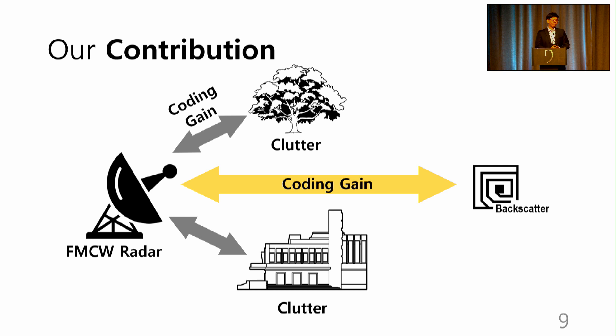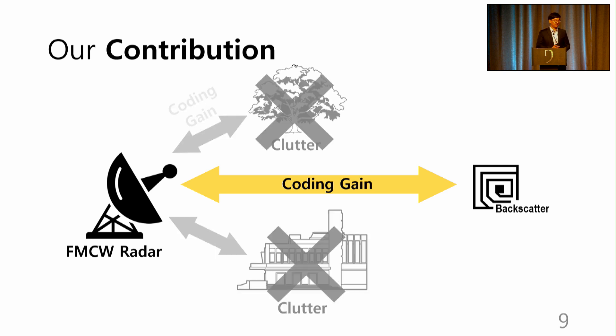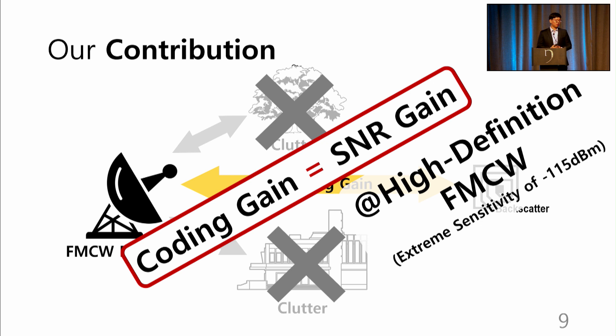Our innovative design does exactly this. We eliminate the ambient reflections while retaining the coding gain of FMCW. By doing so, our design, the high-definition FMCW, achieves an astonishing sensitivity of minus 115 dBm.